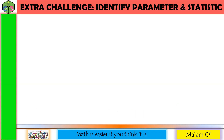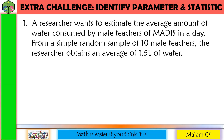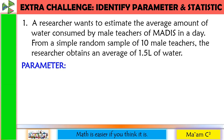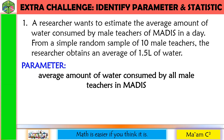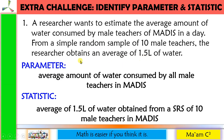Let us do an extra challenge — identify the parameter and the statistic. Number one: a researcher wants to estimate the average amount of water consumed by male teachers of MADIS in a day. From a simple random sample of 10 male teachers, the researcher obtains an average of 1.5 liters of water. The parameter is the average amount of water consumed by all male teachers in MADIS. The statistic is the average of 1.5 liters obtained from the simple random sample of 10 male teachers.